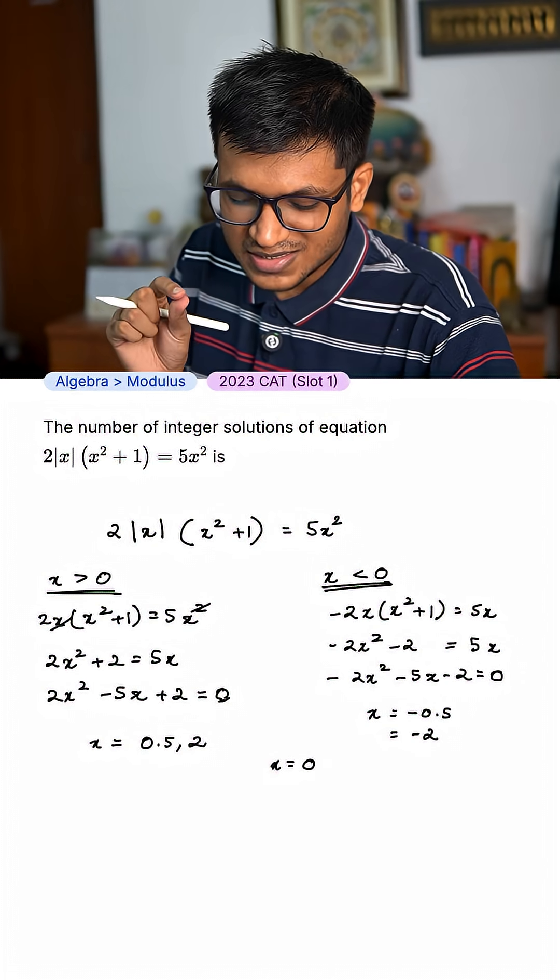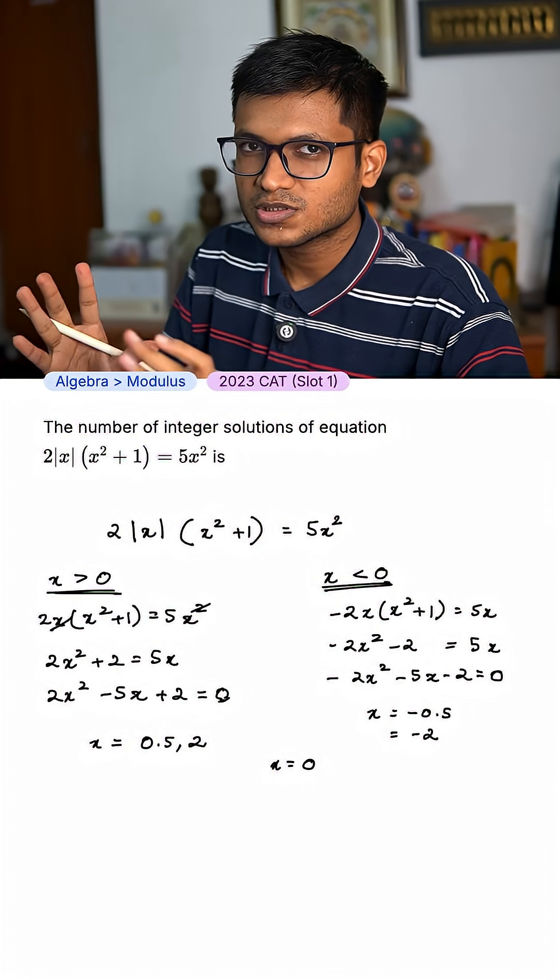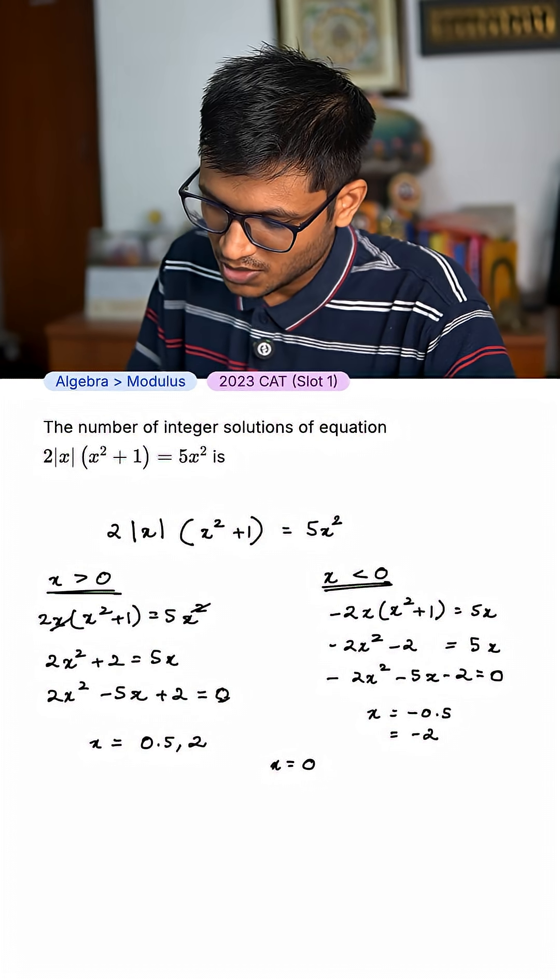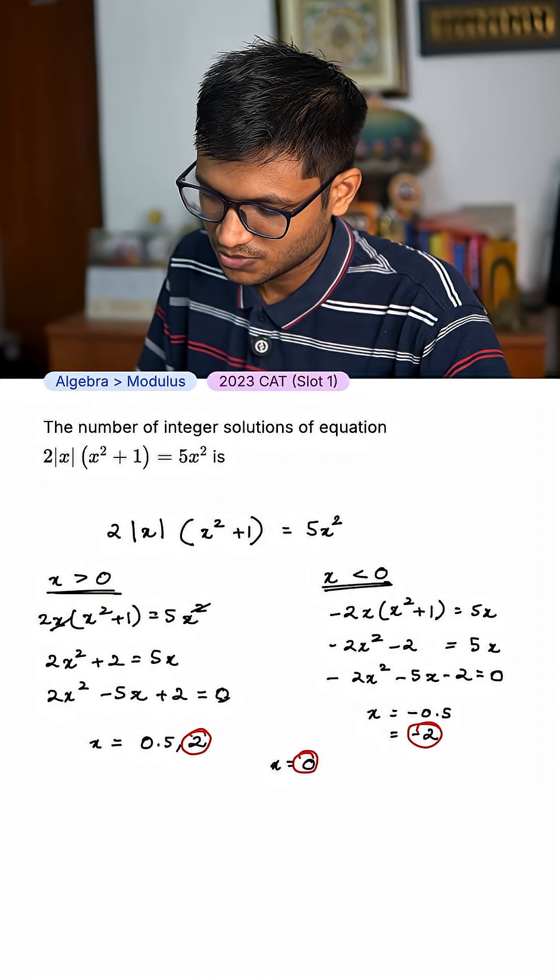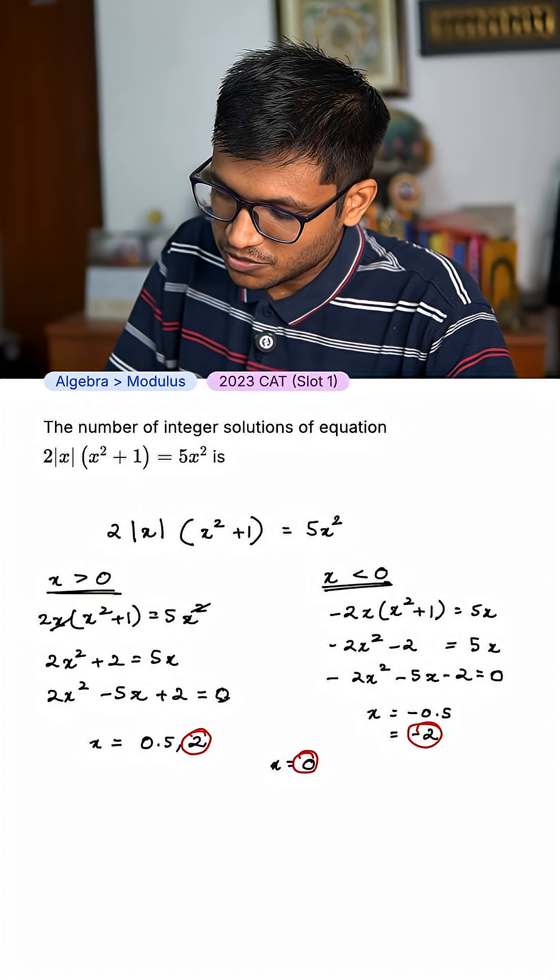Question asks just the number of integer solutions. Integer solutions means decimals. So, this is an integer solution, this is an integer solution, and this is an integer solution. That's three, we have three integer solutions.